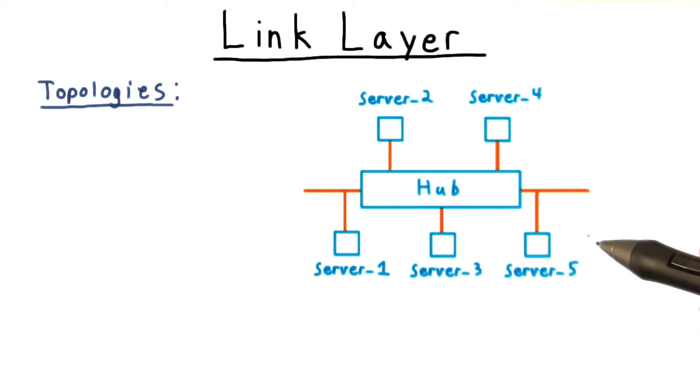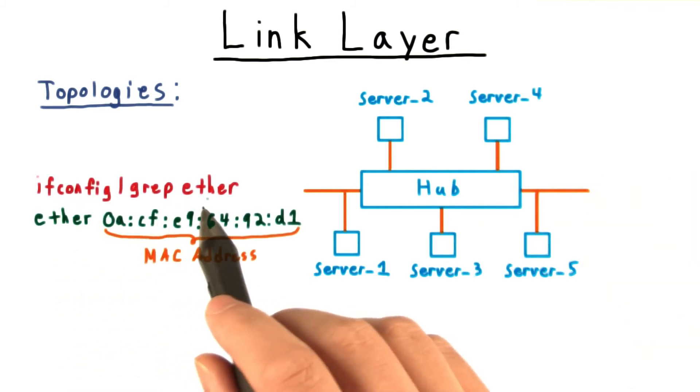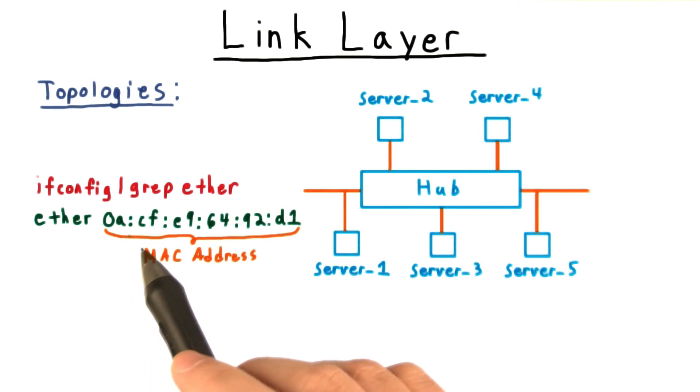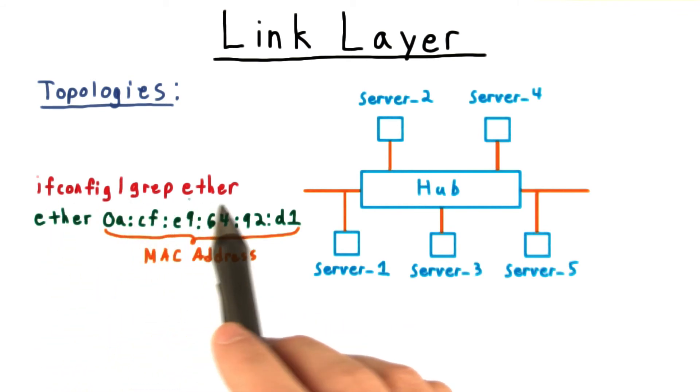If you have a router or a modem at home, you can probably find the MAC address printed on the box. On a Unix-like machine, you can find your MAC address of your network interfaces with ifconfig and then pipe it out to grep for ether.